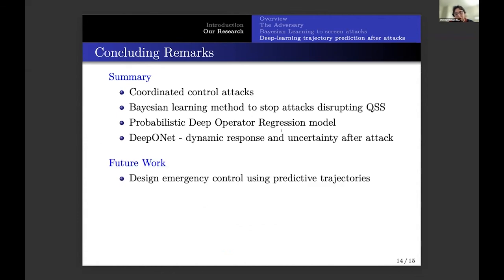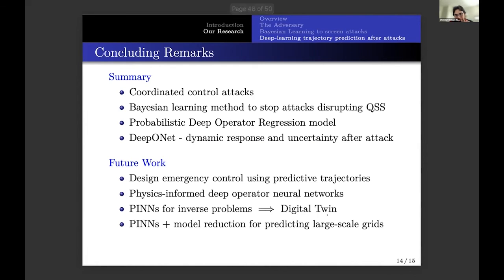In our future work, we're going to design emergency control using our predictive trajectories. We're looking at using the physics of the power system to improve our generalization and create what is called physics-informed deep operator neural networks. And by using also a way to use solutions for inverse problems, plus the physics-informed deep operator neural networks, we're going to construct the digital twin of a larger scale power grid system.